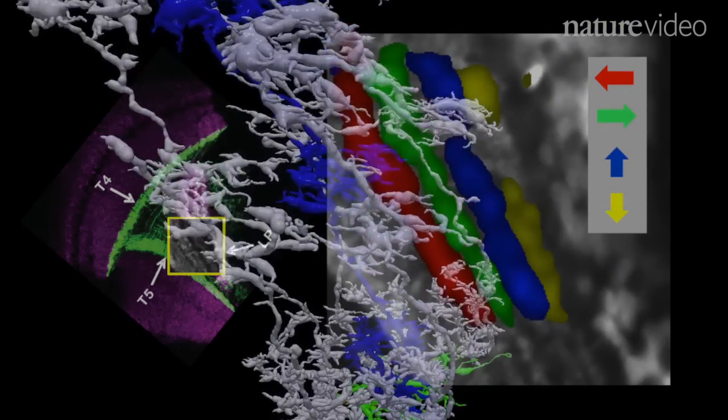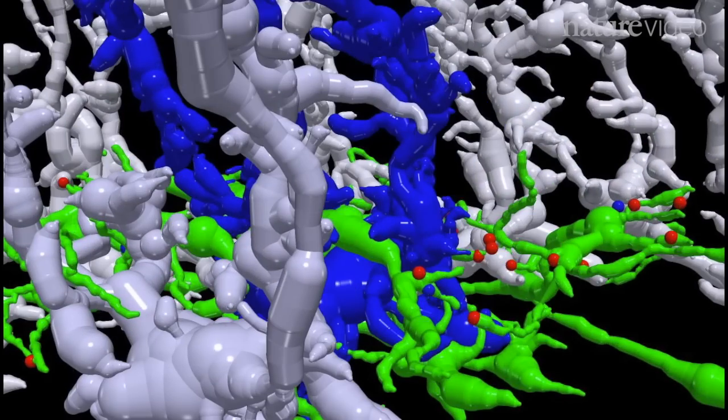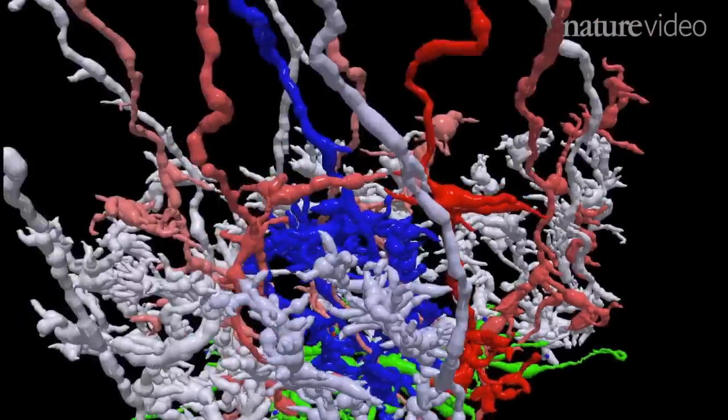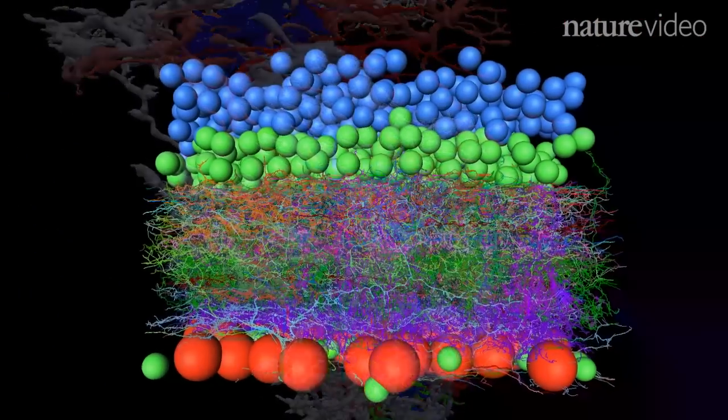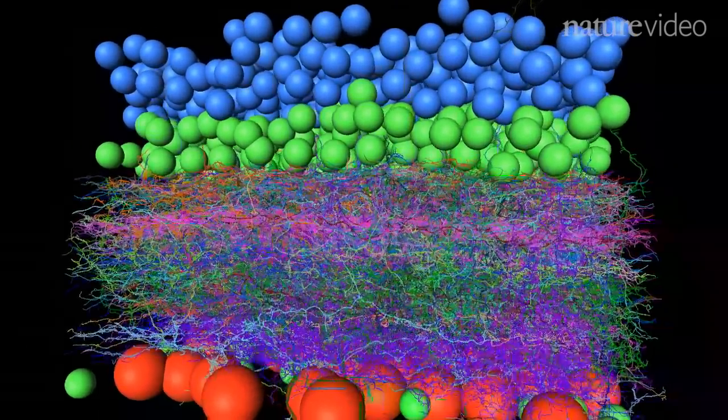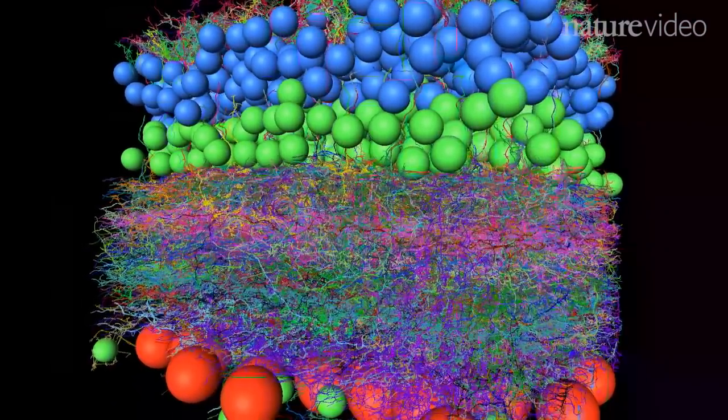The precise wiring mapped by the first group shows how information moves through the network and so how the direction is actually detected. Together, these three studies demonstrate that extraordinarily detailed anatomy combined with physiology is furthering our understanding of the brain.